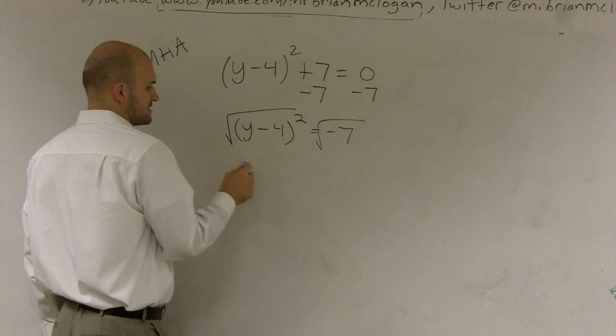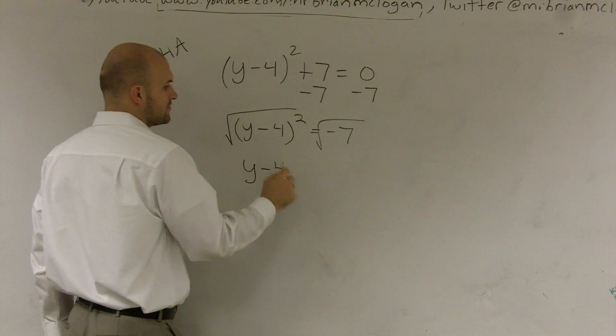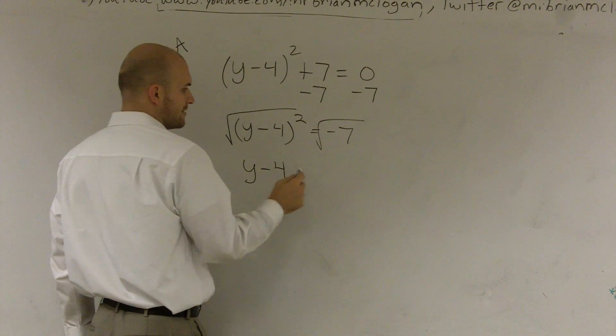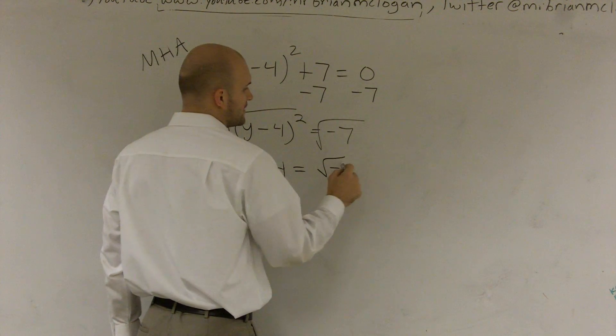Alright, so therefore, that's going to give me y minus 4 is now equal to the square root of negative 7.